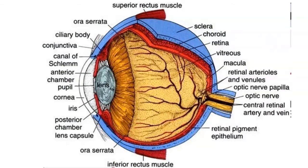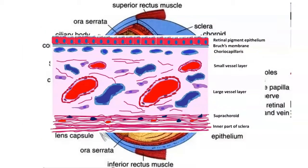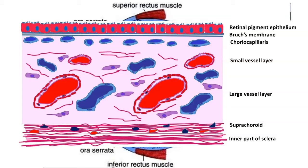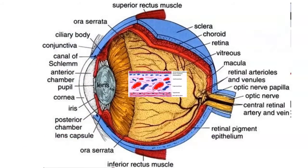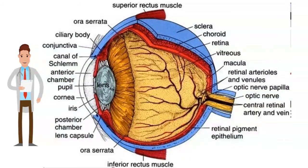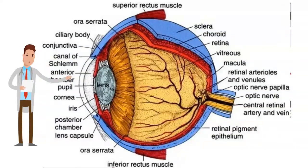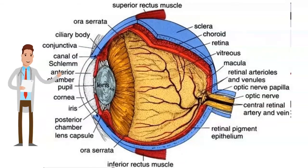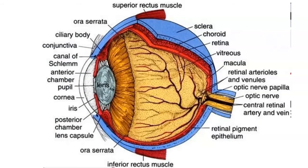The choroid is the vascular layer of the eye, composed of three parts: the small vessel layer, large vessel layer, and choriocapillaris. Its function is to nourish the outer one-third of the eye, and it also plays a role in heat regulation — photoreceptors are subjected to high temperatures as light hitting the retina is partly converted into heat. The choroid's melanin absorbs most of the heat, and its high-flow circulation dissipates it. Blood supply comes from the long and short posterior ciliary arteries, originating from the ophthalmic artery.